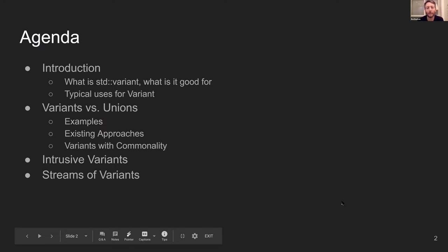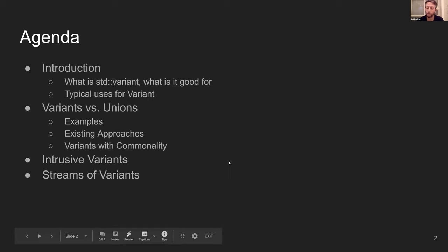I'll basically start with the introduction and tell you what Variant is to make sure we're all on the same page. Then I'll dive deep into the differences between Variants and Unions, and cases where people use Unions. Then I'll give some tools and ideas on how we can get the best of both worlds — the values of Variants with some benefits that Unions give us — and those are Intrusive Variants and Streams of Variants. If we have time, I might show yet another related trick.